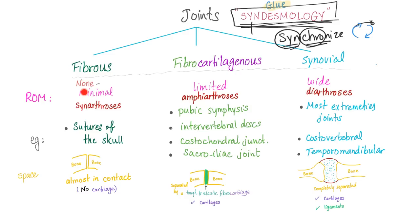Fibrous joints provide no movement whatsoever — we call them synarthroses, such as the sutures in your skull. Bone to bone, no cartilage in between. 'Syn' means the same, 'arthro' means joint — they are essentially a continuum of the same bone.